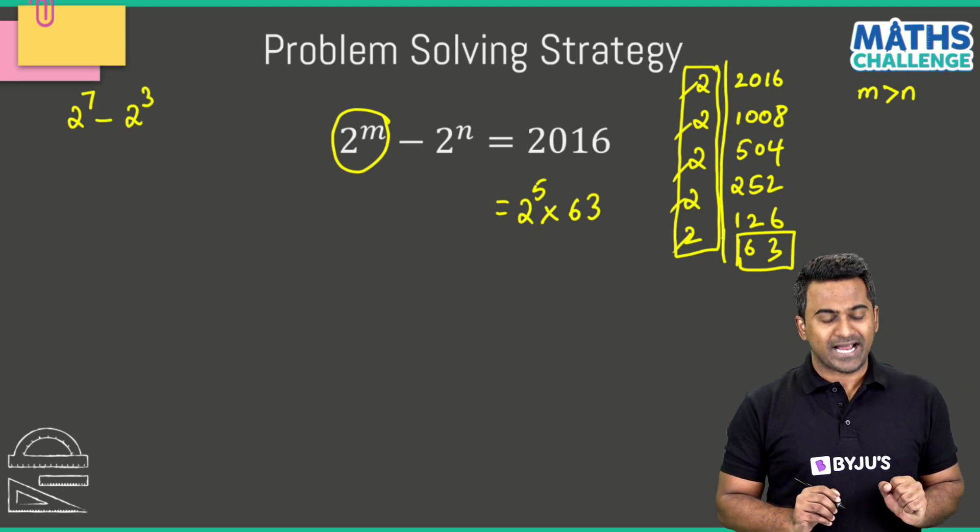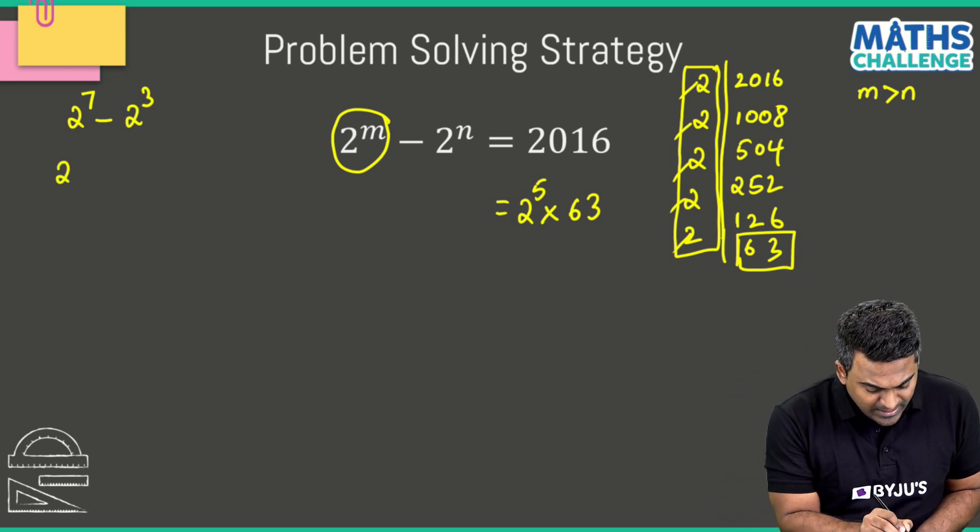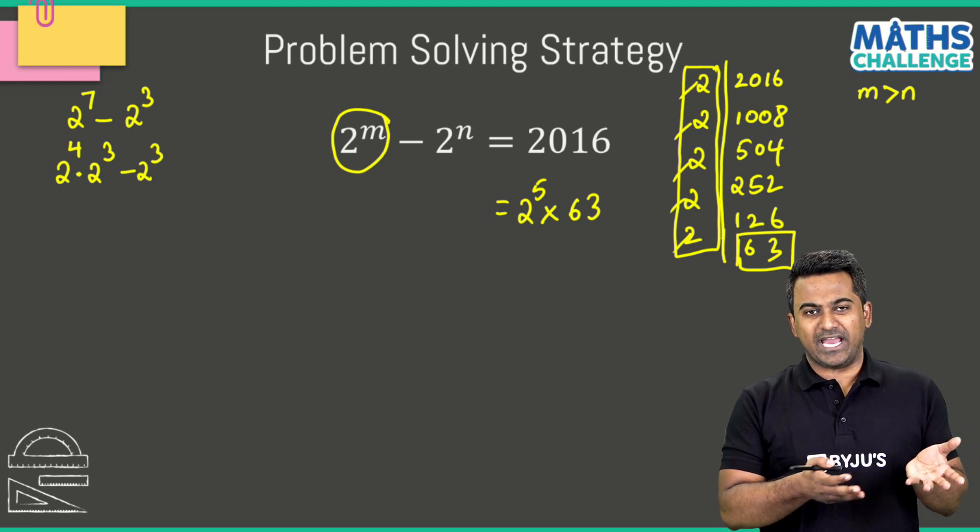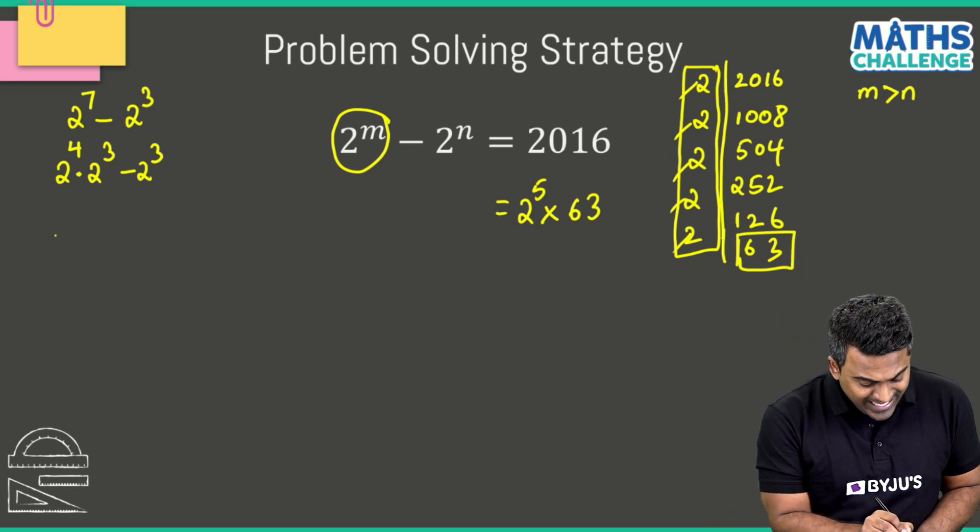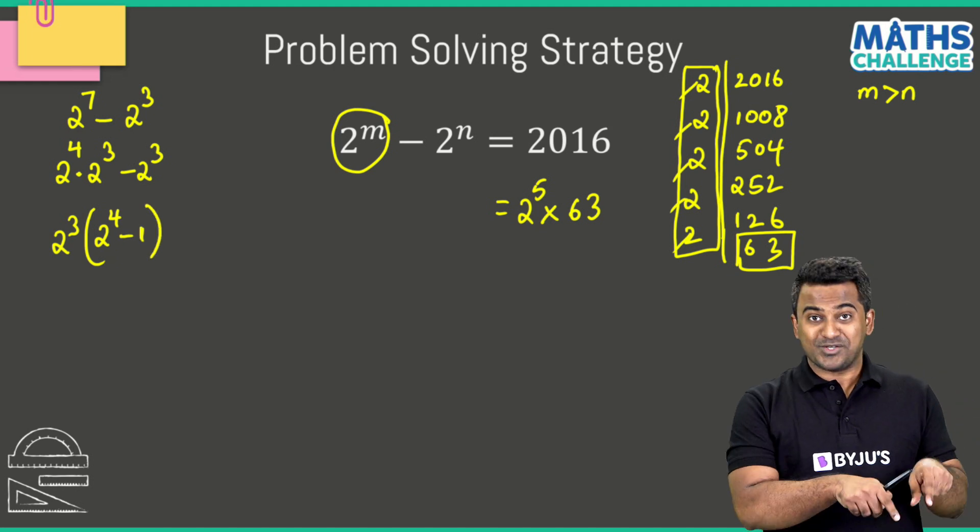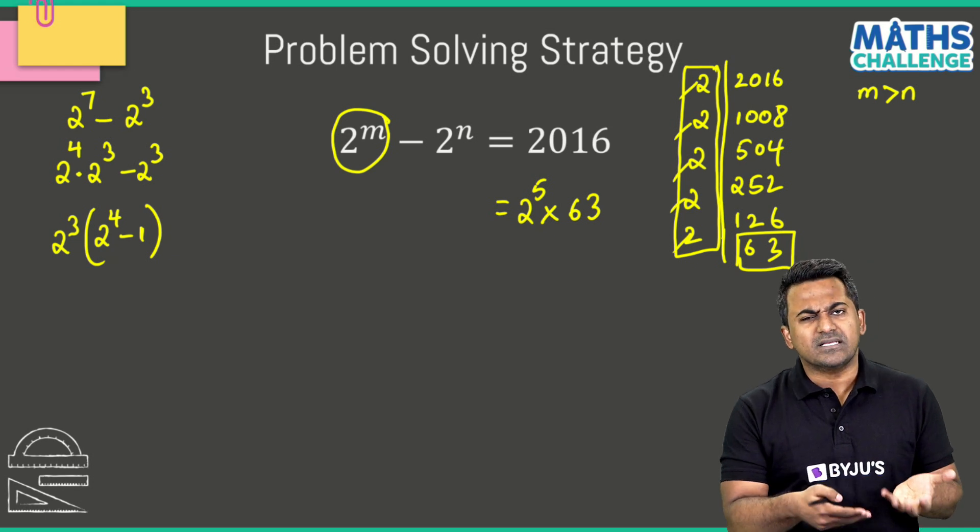Let's suppose you have an equation like 2^7 - 2^3. Now 2^7 I can write in terms of 2^3, so this can be written as 2^4 multiplied with 2^3 minus 2^3. I'm using fairly simple rules here: a^m multiplied with a^n equals a^(m+n). Then I can take 2^3 common and write it like 2^3(2^4 - 1). You see, I've converted this subtraction into a multiplication thing.